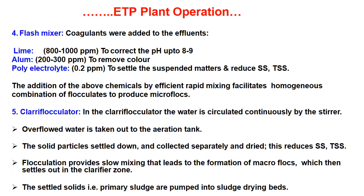Number four is the flash mixer, where coagulants are added to the effluents. Lime at 800 to 1000 ppm is added to correct the pH up to 8–9 when the effluent is acidic. Alum at 200 to 300 ppm is added to remove color and help in flocculation. Polyelectrolyte at 0.2 ppm is added to settle suspended matter and reduce SS and TSS. Efficient rapid mixing of these chemicals facilitates homogeneous combination of flocculants to produce micro flocs.